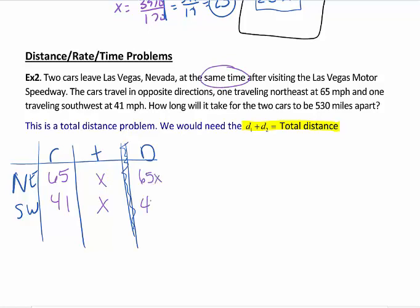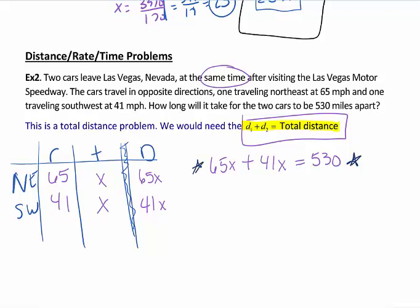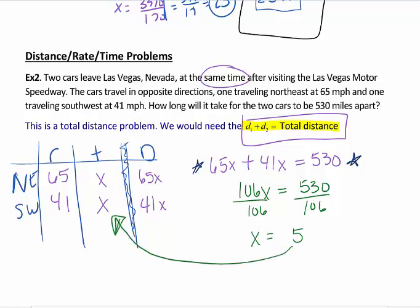For distance, we always multiply across. Because this is a total distance problem, we will take the distance that the northeast car drove, which is 65x, plus the 41x, which is the southwest distance. And it should give me a total of 530. This is mandatory, the chart is not, but I highly recommend it. So we now add our like terms, we get 106x equals 530. Divide both sides by the 106, we should get 5. What I like about the chart is I have no confusion on what I just solved for. This is the time. My answer here is 5 hours.